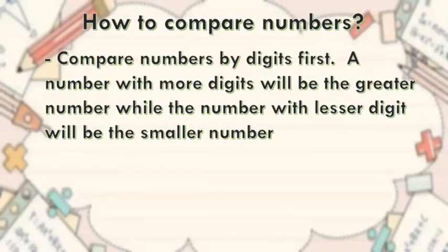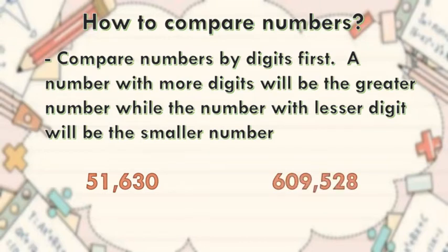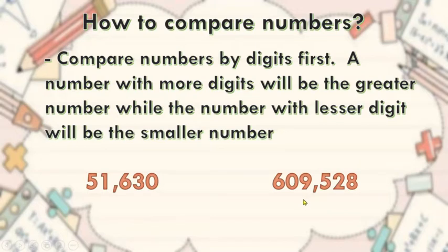Next example, compare 51,630 and 609,528. 51,630 has one, two, three, four, five digits. 609,528 has six digits. Five digits is smaller than six digits. Therefore, 51,630 is less than 609,528.